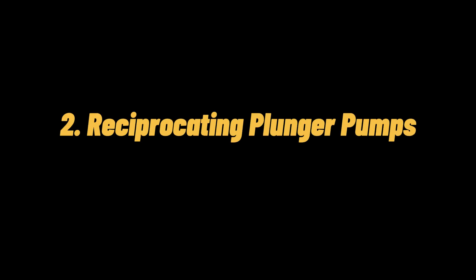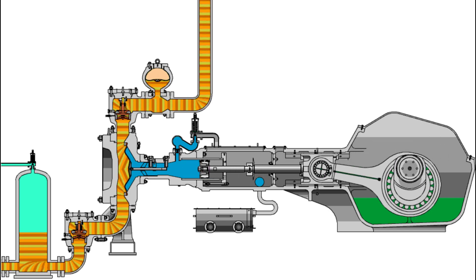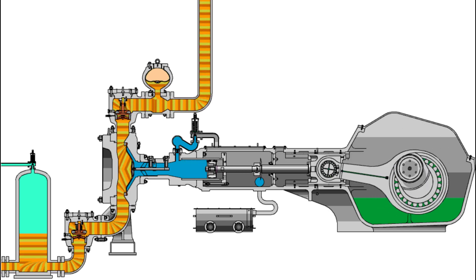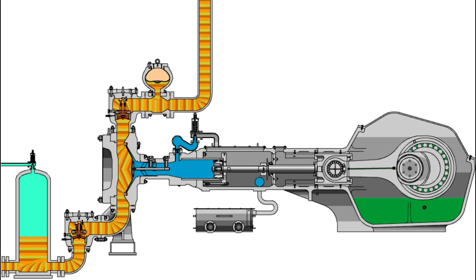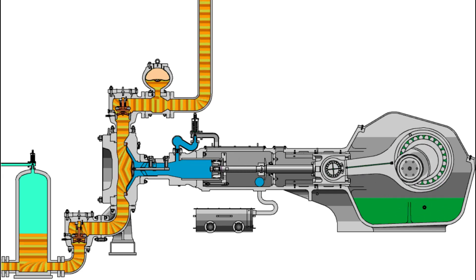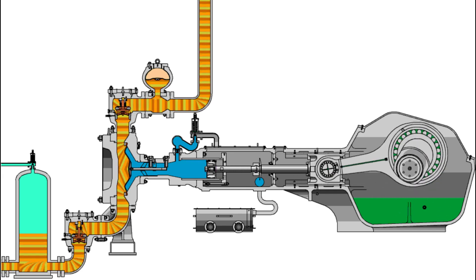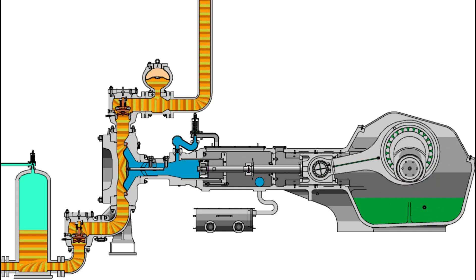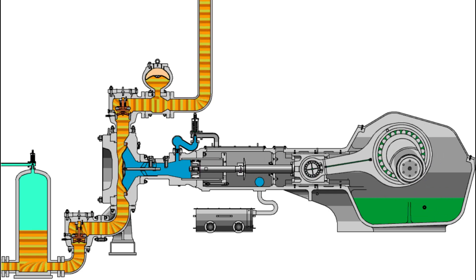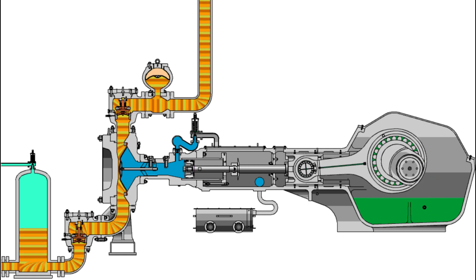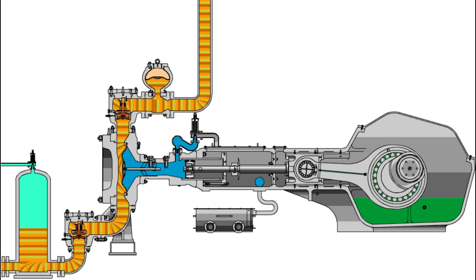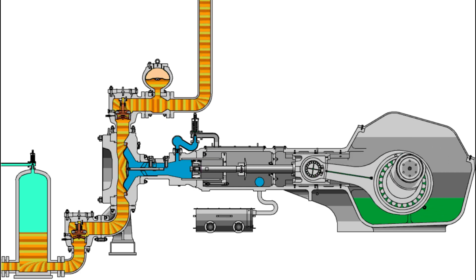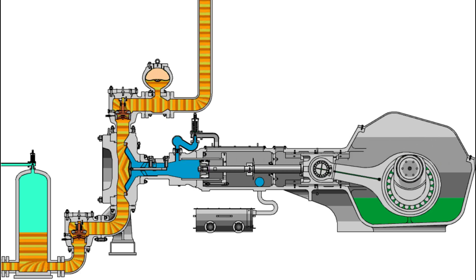2. Reciprocating Plunger Pumps. The oil and gas businesses commonly use plunger pumps, which are among the most common industrial pumps. Plunger pumps pressurize fluid in an enclosed cylinder to a pipe system using the reciprocating motion of plungers and pistons. Plunger pumps require more frequent maintenance than centrifugal pumps due to the design of their moving parts, and they additionally have a noisier operation.